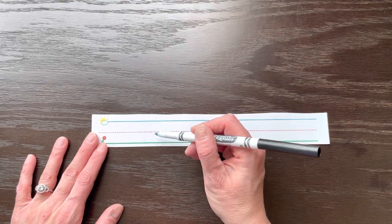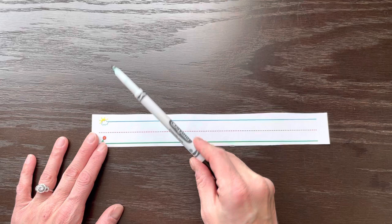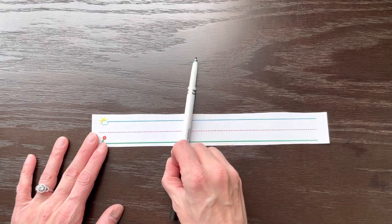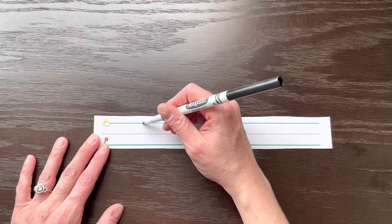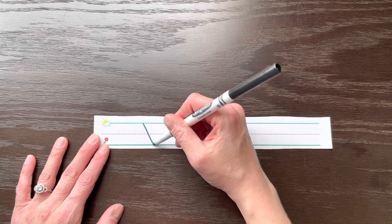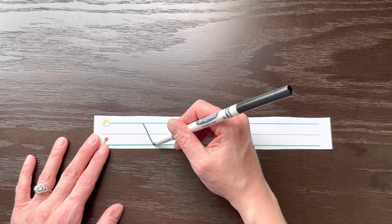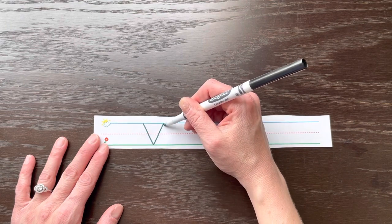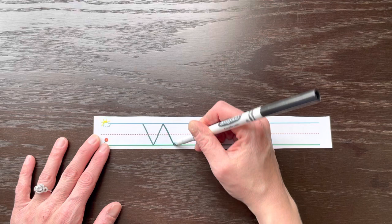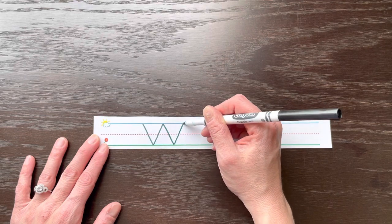You want to make sure that your lines are diagonal like this and not straight up and down. To do a capital W you start at the top and you slide to the ground. When you touch the ground you don't pick up your pencil but you climb the mountain back to the top, touch the top, slide to the ground, touch the ground, and then climb the mountain back to the top.